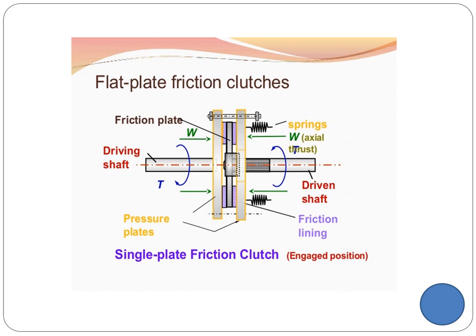When these two engage each other, there is power transmission from the driving shaft to the driven shaft. If you want to interrupt this, you need to take the driving shaft away from the attachment — create a gap between the two — and that is how you engage and disengage. The important properties here are the coefficient of friction, the applied load, and the radius. If you increase these, torque transmission increases. The shafts rotate parallel to each other.